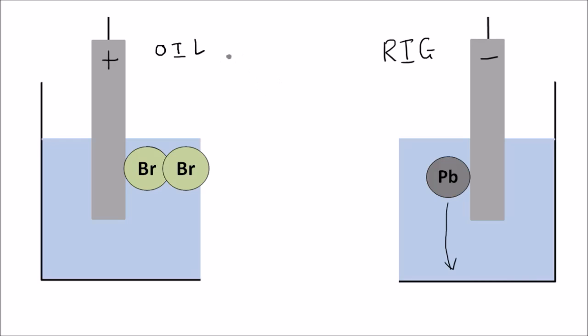We can use OIL RIG to remember what happens at each electrode, because oxidation is loss of electrons and reduction is gain of electrons. That's what that stands for, and it's a useful way to remember what happens at the electrodes.